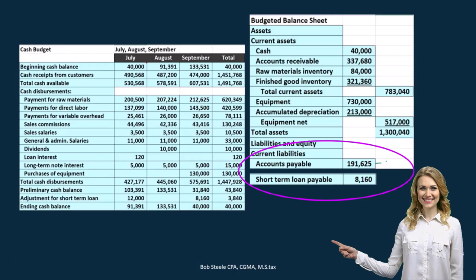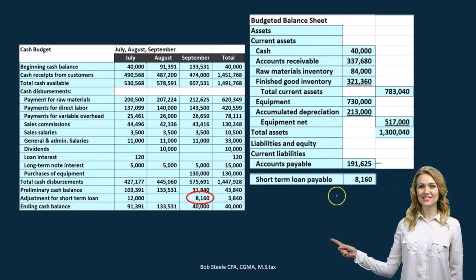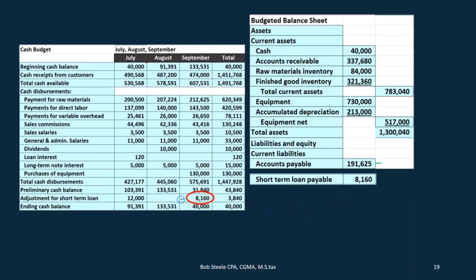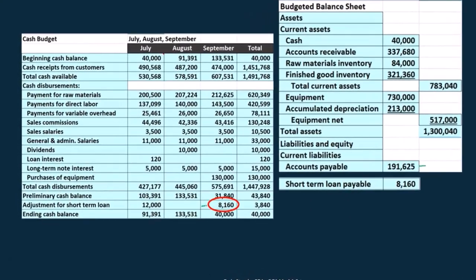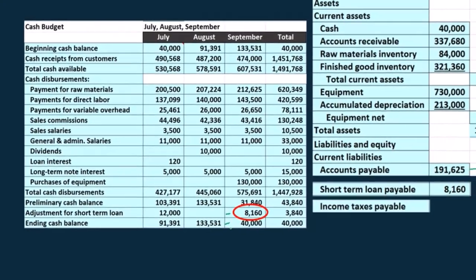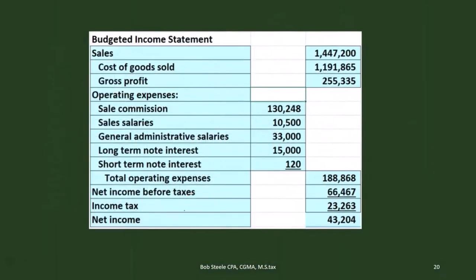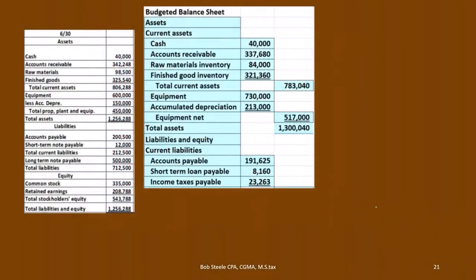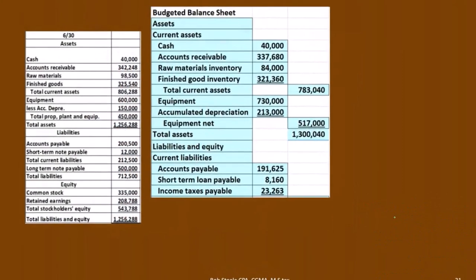Next we have the short-term loan payable of $8,160. We take that from the cash flow statement because that loan fluctuates — it's like a line of credit we needed to get to our minimum cash balance of $40,000. Then we have income tax payable, which comes from the income statement — that's the amount owed for income taxes on the balance sheet at the end of this time period.